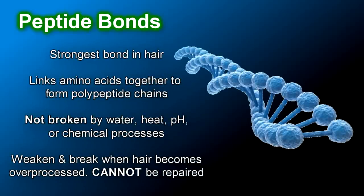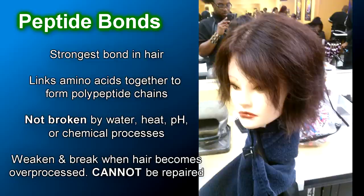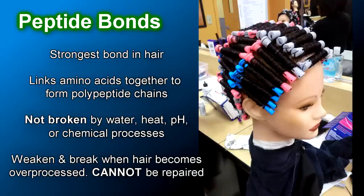The previously discussed three bonds were all considered side bonds, as they connect and link multiple polypeptide chains together side by side. However, peptide bonds are different in that they link individual amino acids to form a single polypeptide chain — hence the name polypeptide. These are the strongest bonds in the hair. They are not altered by water, heat, pH, or chemical processes. However, these bonds will become weak and break when hair becomes over-processed, especially when combining two types of chemicals that don't agree with each other, such as using lightener on relaxed hair.